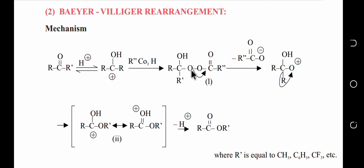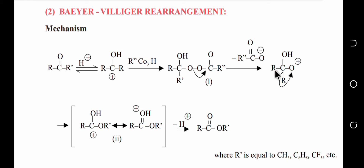After this bonding, the O-O bond will shift. This O-O bond is non-polar because both oxygens have the same electronegativity, so it can break on either side. However, to produce a stable product, this bond breaks toward the original peroxy acid side. As a result, that oxygen gets a complete negative charge and the other oxygen gets a positive charge.